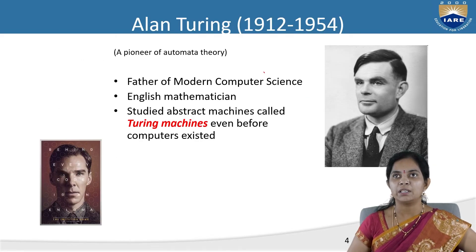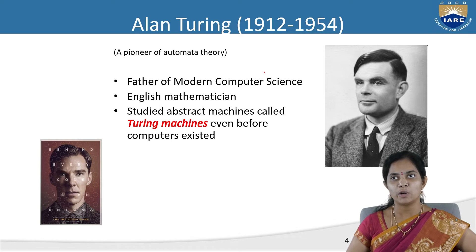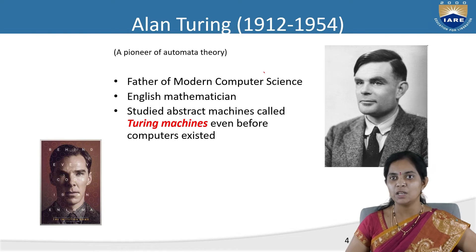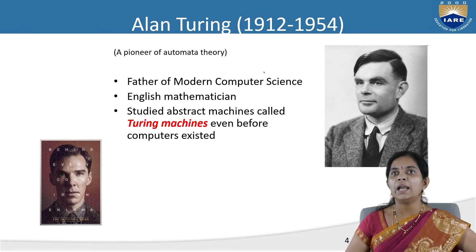Alan Turing is the person who is the father of modern computer science. He was an English mathematician who studied abstract machines called Turing machines, even before computers existed. He is the person wholly and solely responsible for this method of automata theory.